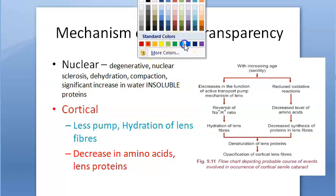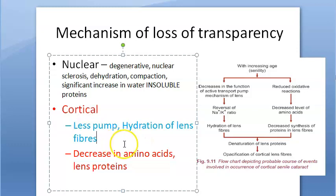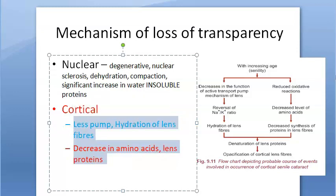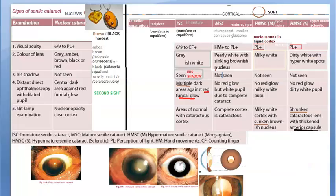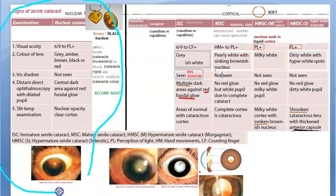To summarize the mechanism of loss of transparency in cortical cataract: there are fewer pumps, so hydration of the lens fibers occurs; there is a decrease in amino acids, so synthesis of lens proteins cannot happen. These are the two main mechanisms behind cortical senile cataract.